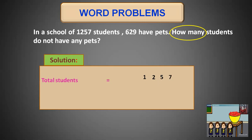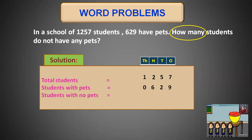Coming to the solution: total students are 1257, students with pets are 629. We have written 6 in the hundreds column, 2 in tens, and 9 in ones. We will write place values at the top because we have to subtract ones from ones, tens from tens, hundreds from hundreds, and thousands from thousands. What we need to find is students with no pets, and for that we will do the subtraction.